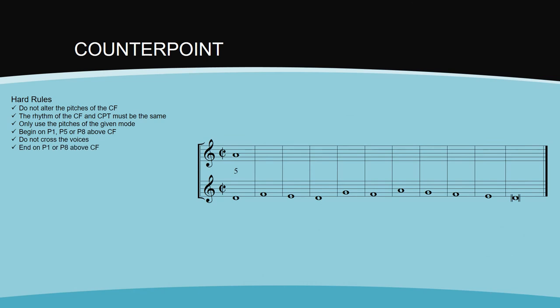Think back to what you just learned about voice crossing. In this example, if we end on a perfect unison, we encounter the same problem as we did at the beginning, a voice crossing. The only other option is the perfect octave.